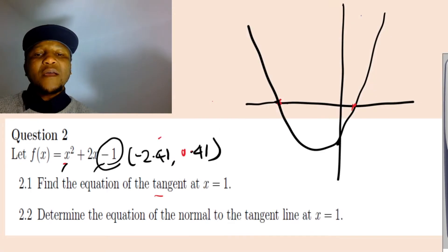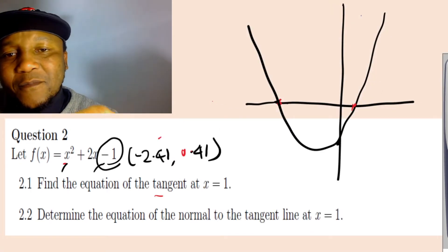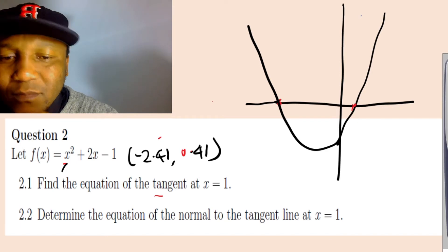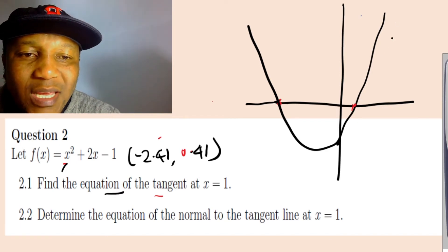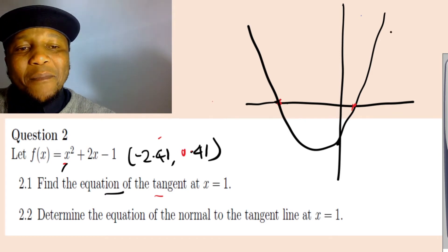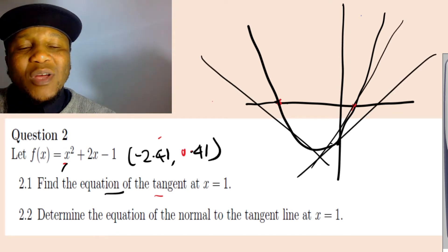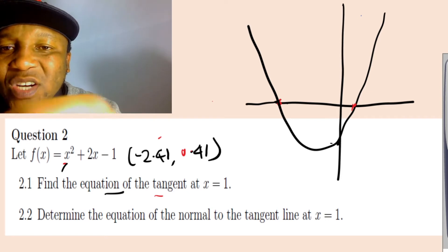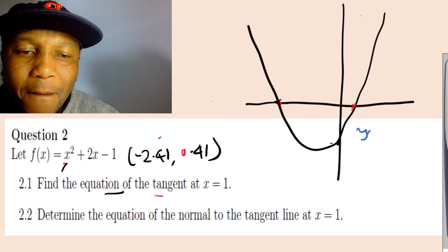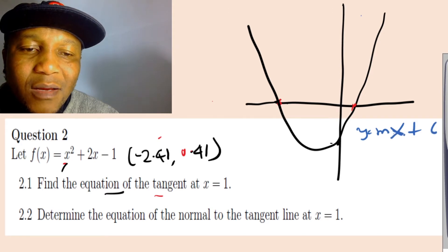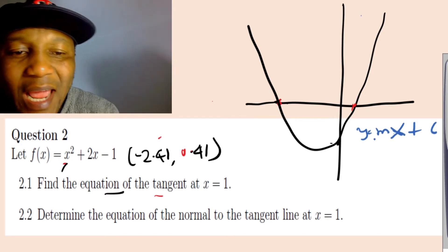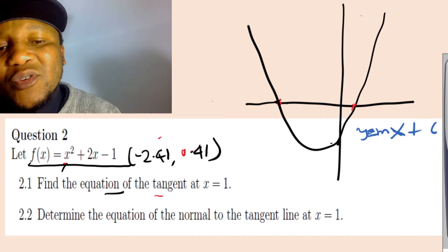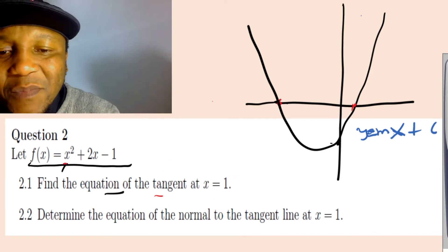Now we want to find the equation of the tangent, which is a straight line. A straight line equation is always y equals mx plus c, where m represents the slope. To get the slope, we differentiate the equation.